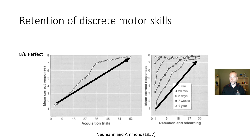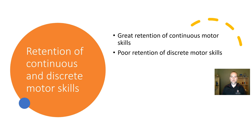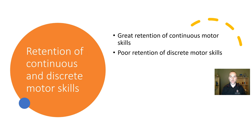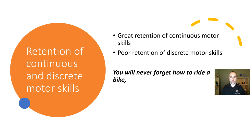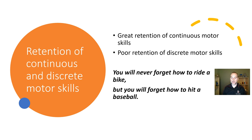Across these two studies we see a striking contrast: great retention of continuous motor skills versus poor retention of discrete motor skills — a finding that's been replicated with more sport-related tasks. So the adage holds: you'll never forget how to ride a bike. But you will forget how to hit a baseball or throw a ball.